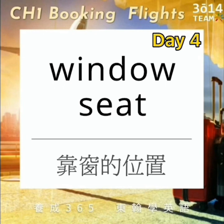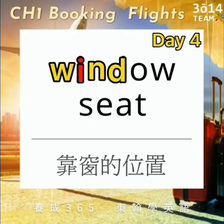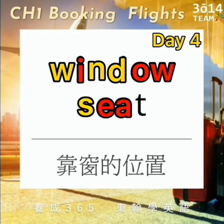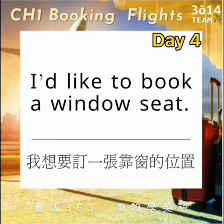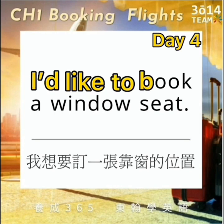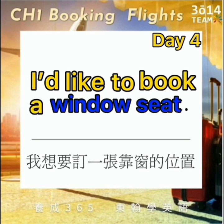订机票会需要选你想坐什么样的位置。Window seat，指的就是靠窗的位置。Seat，指的就是位置、座位。I'd like to book a window seat，跟着我念一次：I'd like to book a window seat。